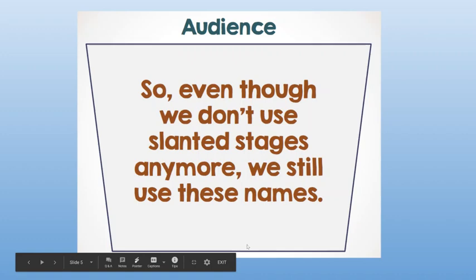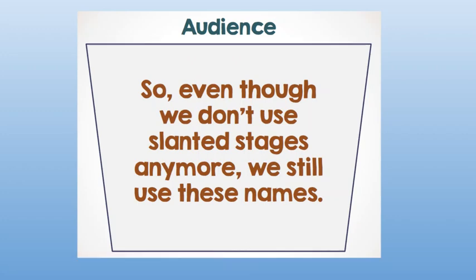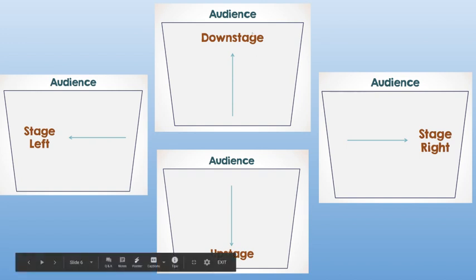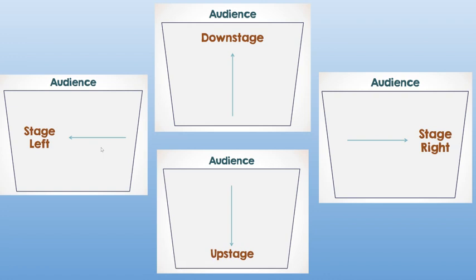It was down, lower down towards the audience. Really easy to remember: upstage, downstage. So even though we don't use slanted stages anymore, we still use these names today. Downstage is towards our audience, upstage is the furthest away. Stage left is your left side as you're facing the audience. As if you walked onto the stage, you would face the audience and stage left is your left and stage right is your right.